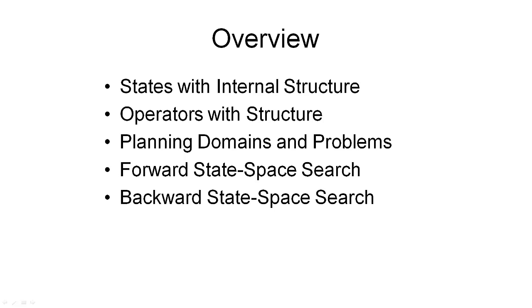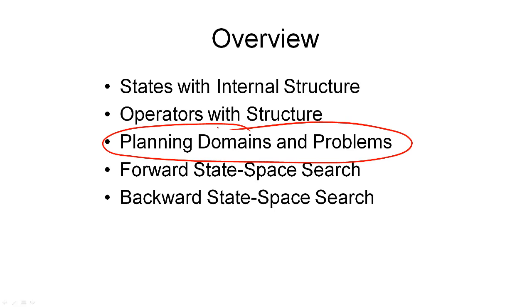Now that we've seen how the internal structure of operators and states can be represented in the STRIPS representation, it is time to turn to the bigger picture — planning domains and planning problems. Planning domains implicitly define the graph in which we're doing search. Planning problems also define the states from which we're going and to which we want to go. Plans are solutions to planning problems, and we will now define all this formally.